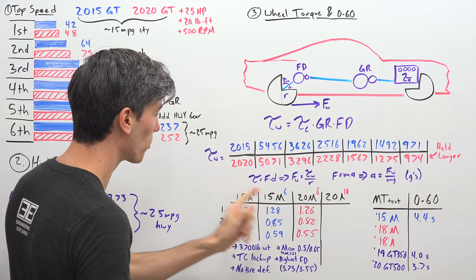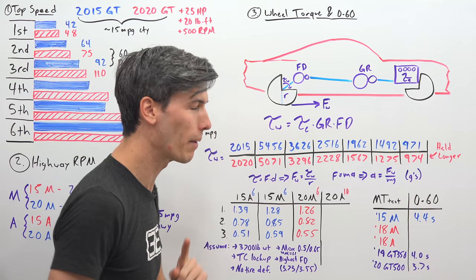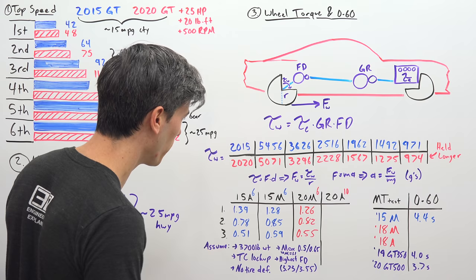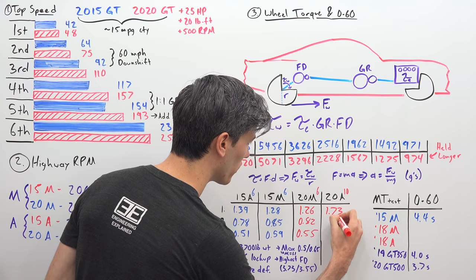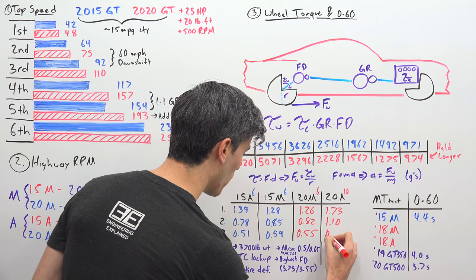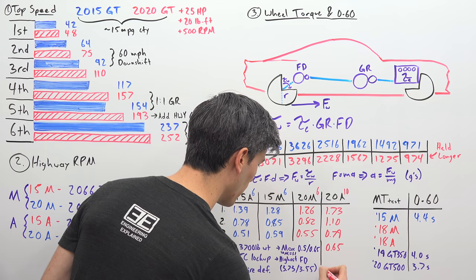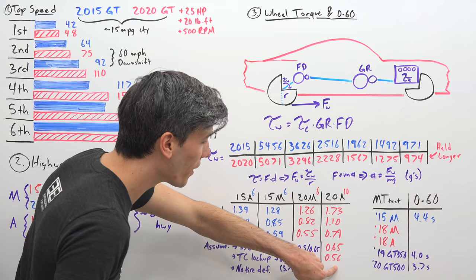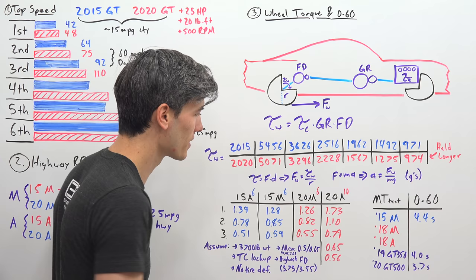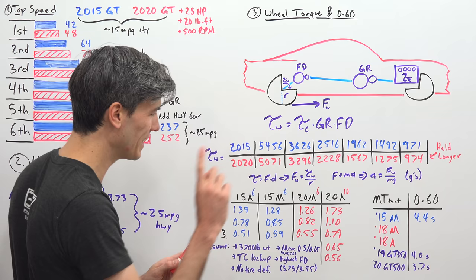And so then if you look at the 2020 automatic transmission which has a 10 speed automatic. They went all out here and they made it super fun. So that's kind of the disappointing thing is that the manual got worse. The automatic got so much better. So if we look at the numbers for the automatic transmission. First gear peak 1.73 G's. Second gear 1.10 G's. Third gear 0.79. Fourth gear 0.65. Fifth gear 0.56. So look at this. In fifth gear with the new Mustang GT with the automatic transmission. You'll have more acceleration than in third gear with the manual transmission. And that's because it's a 10 speed so it has all the options there. But they give you a ton of aggressive gears.